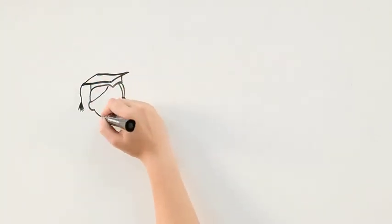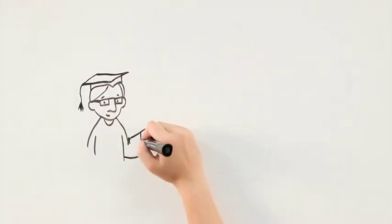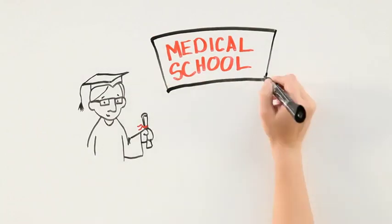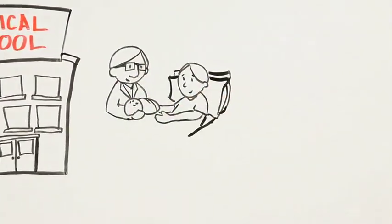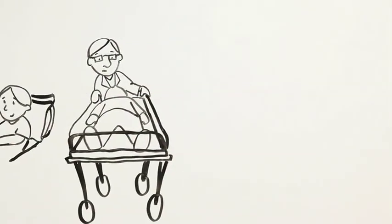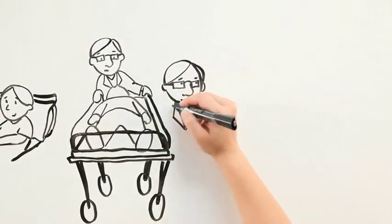To become an ophthalmologist, after getting an undergraduate degree, you need to go to medical school for four years. In medical school you do everything like deliver babies, do shifts in the ER, and run codes to resuscitate patients whose hearts have stopped beating.